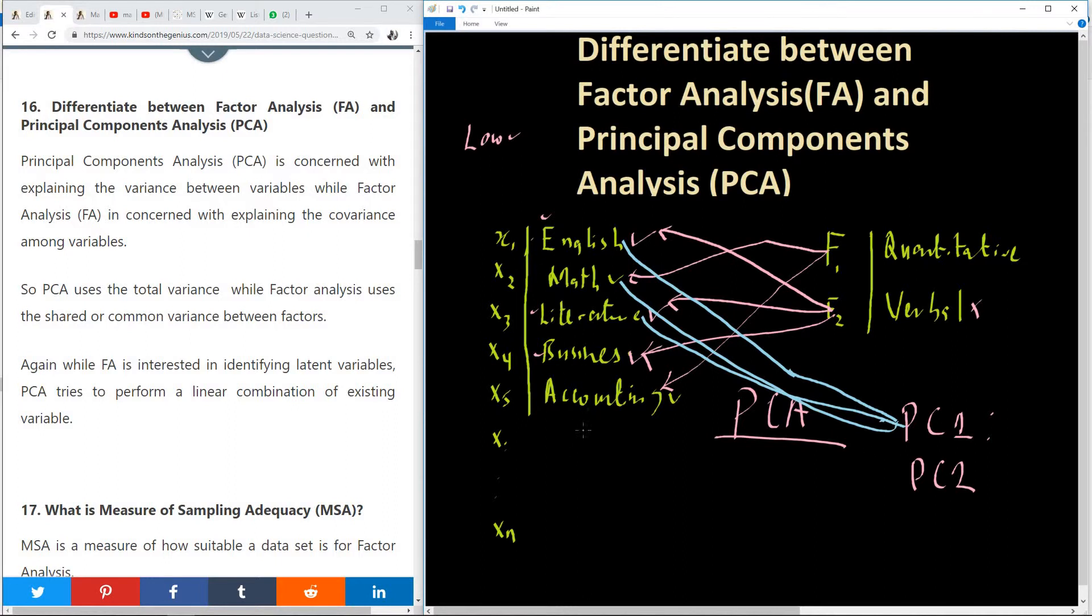So to summarize, we have that FA identifies latent variables, which we refer to as factors, but PCA does linear combination.